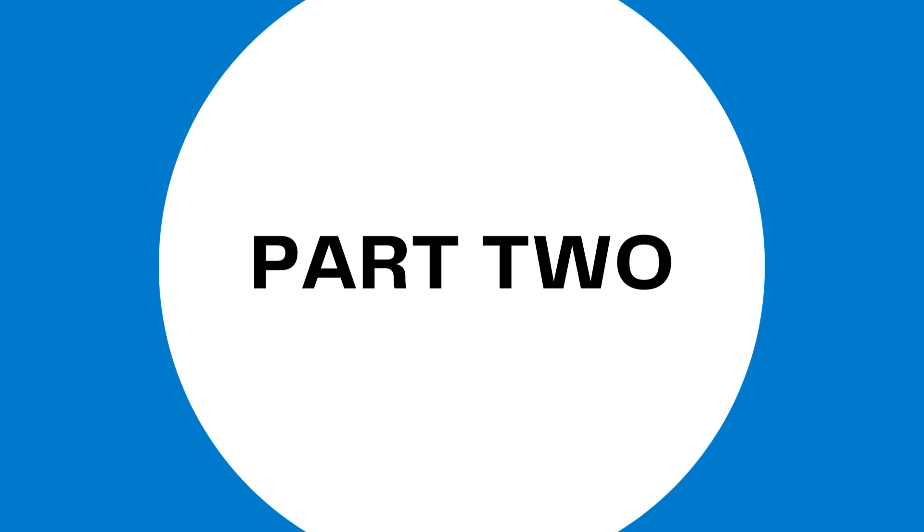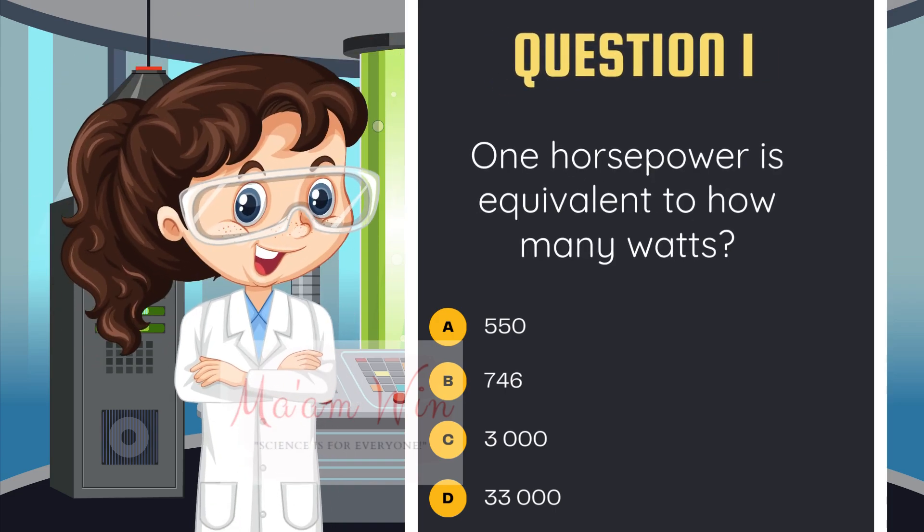Let us now proceed with part 2. Question number 1. One horsepower is equivalent to how many watts? Letter A, 550. Letter B, 746. Letter C, 3,000. Letter D, 33,000.